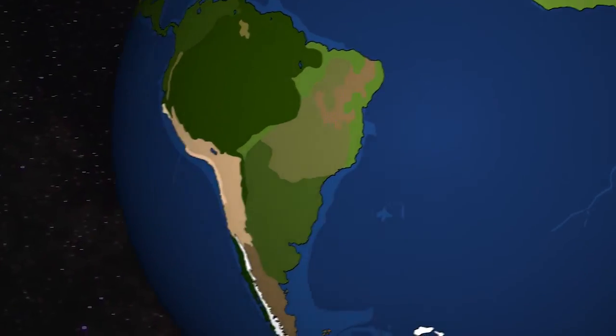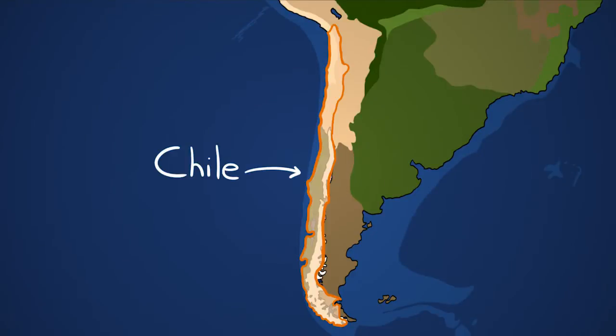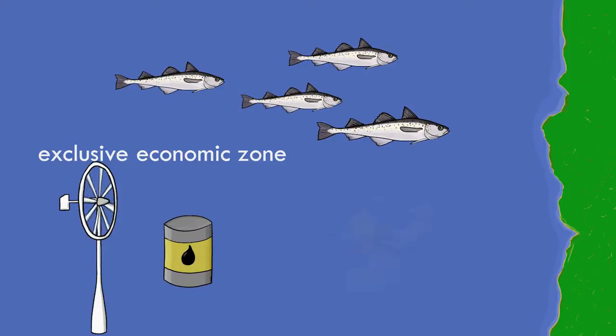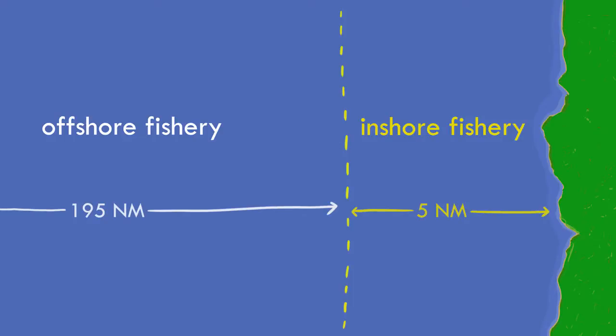One cool example is with the Chilean nearshore fisheries in Chile. All countries now have a 200 nautical mile exclusive economic zone where that country owns the rights to all the fishing, energy sources, or other resources. In Chile it's split up into a 5 nautical mile inshore fishery with the rest part of the offshore fishery.